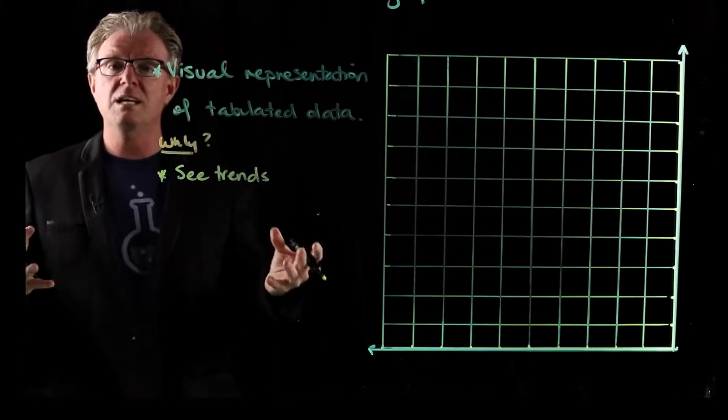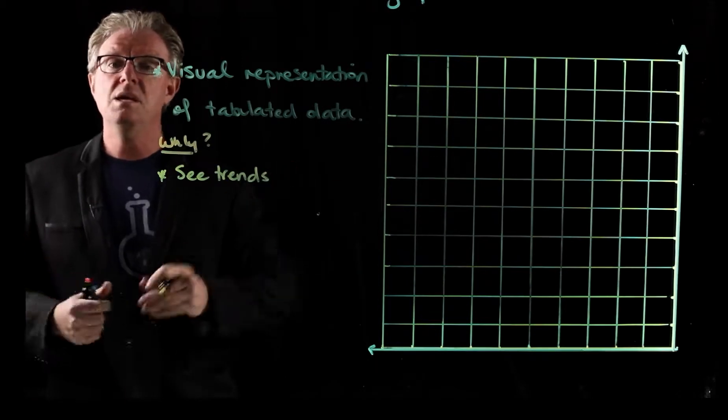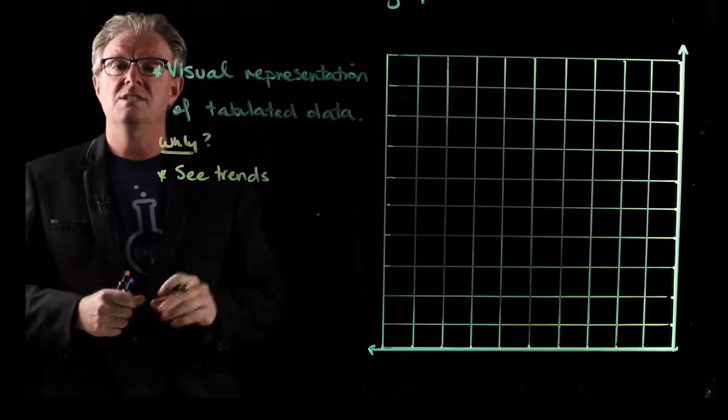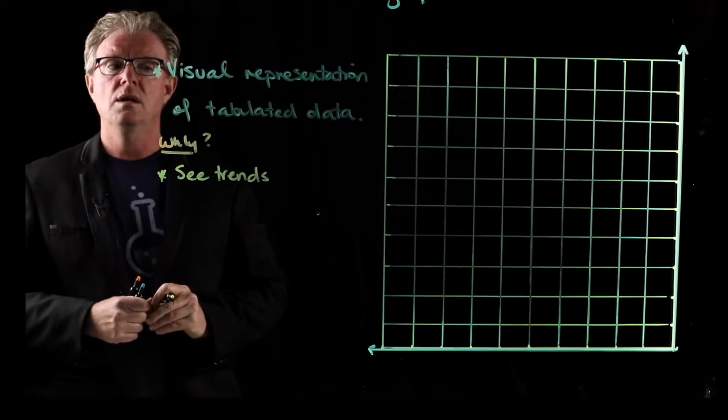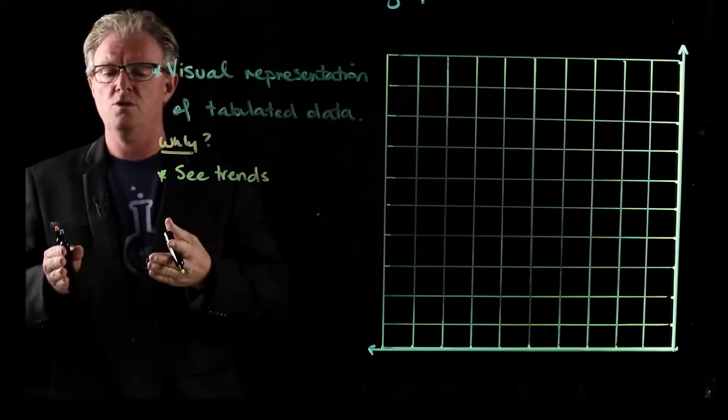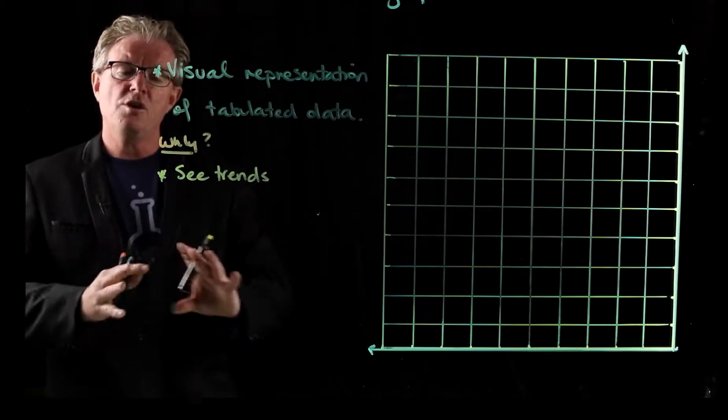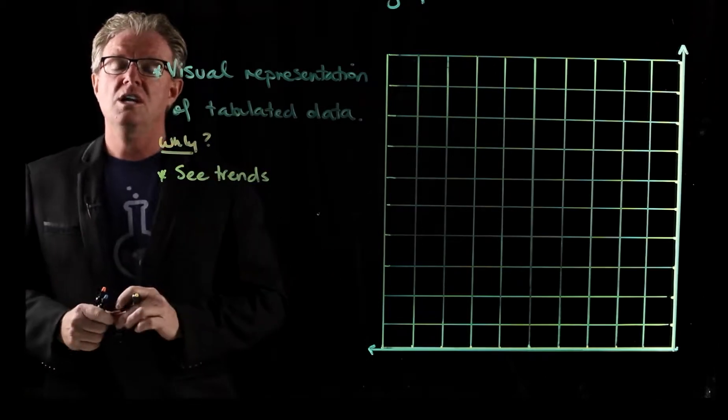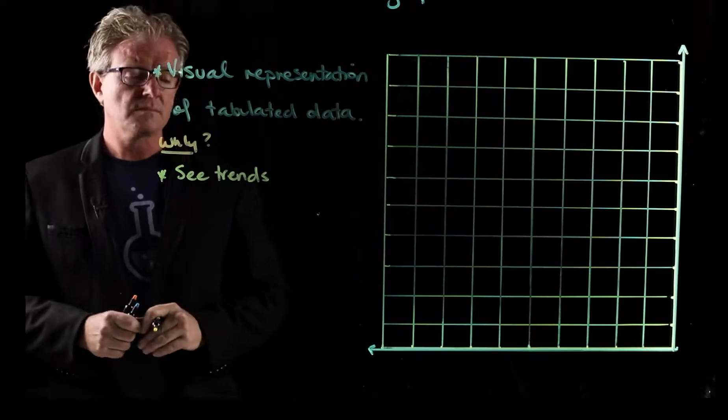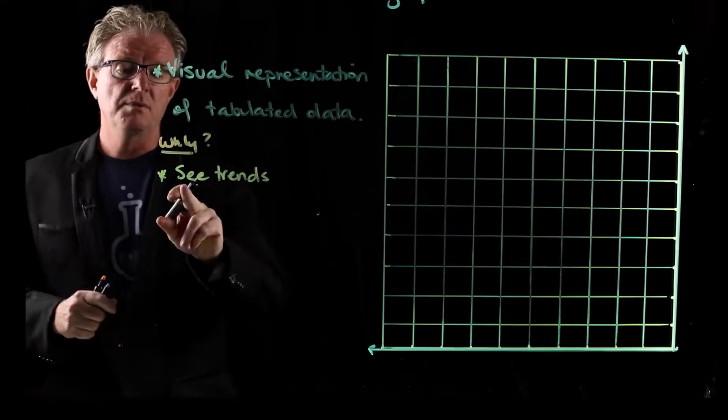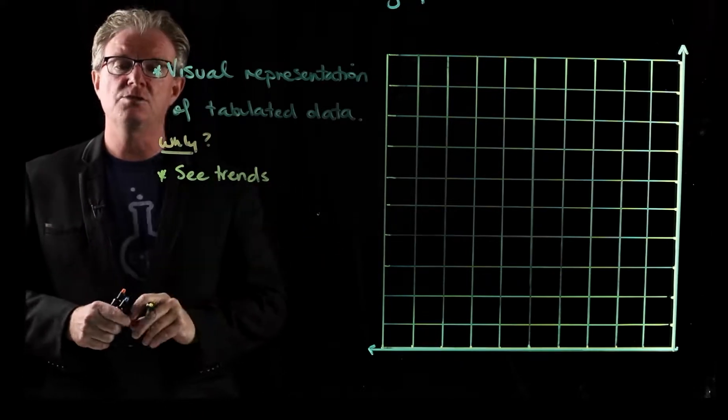But all the other variables in the experiment you need to keep the same. You need to have the same heat source, you need to have the same volume of water that you're recording, you need to have the same type of water, fresh water or salt water. A lot of variables you need to keep the same and you're only changing the one that you are investigating, which is the independent variable. But we can graph that data to see trends.